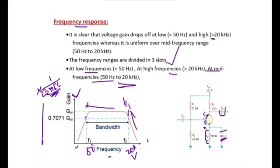At mid frequencies, the capacitor reactance effectively shunts the emitter resistance, which is why the frequency response is flattened in the mid-range. The audio frequency range is 20 Hz to 20 kHz. Since this practical two-stage RC coupled amplifier provides constant gain from 50 Hz to 20 kHz, it gives effective fidelity for audio frequencies. Because of this, the two-stage RC coupled amplifier acts as a good fidelity amplifier at audio frequencies.